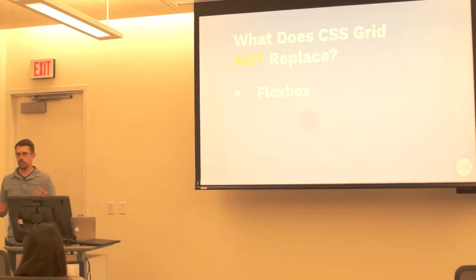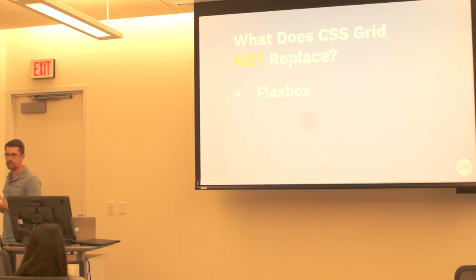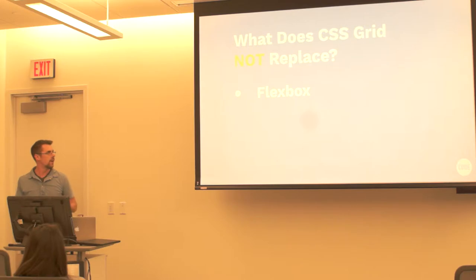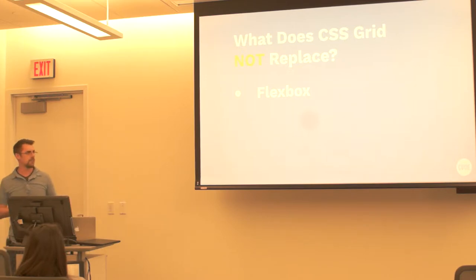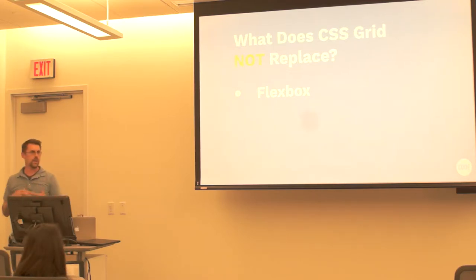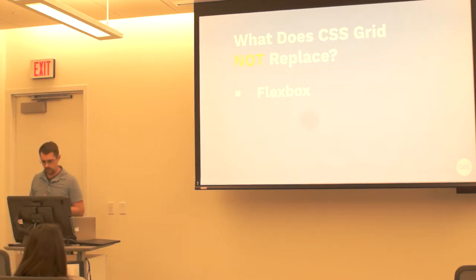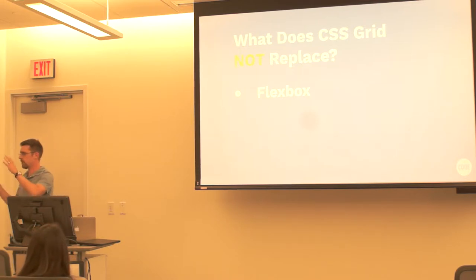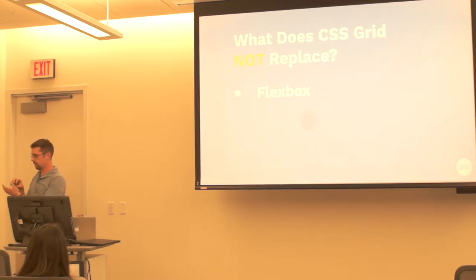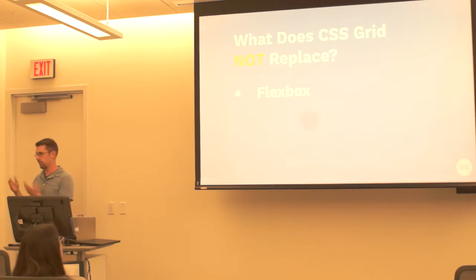What does CSS Grid not replace? The big one, and someone mentioned this tonight, is Flexbox. Flexbox is another technology - it's not quite as new, but it was released in CSS a couple years ago. It kind of had the same status that Grid does now. Flexbox allows you to essentially have elements fill a space in a flexible way - that's kind of a vast oversimplification. CSS Grid doesn't replace that. There's some overlap and you can use either one for some things. But Grid seems really well positioned to create the whole structure - the layout of a whole page or a whole view - whereas Flexbox might be useful for singular elements within that, or a small group of buttons or something like that.